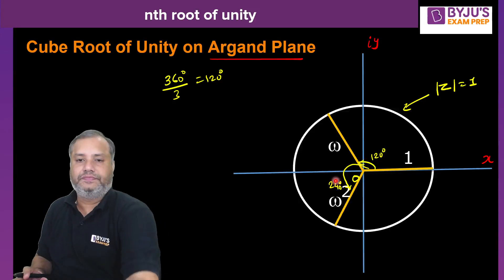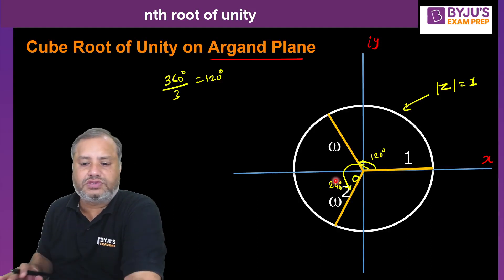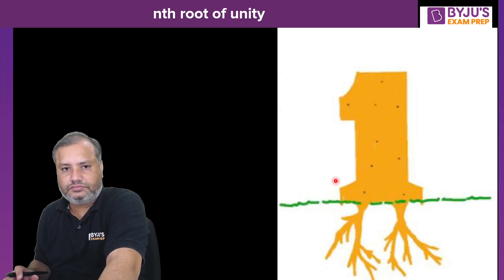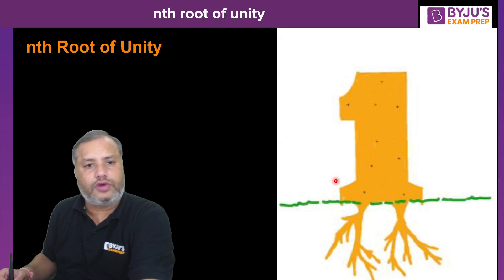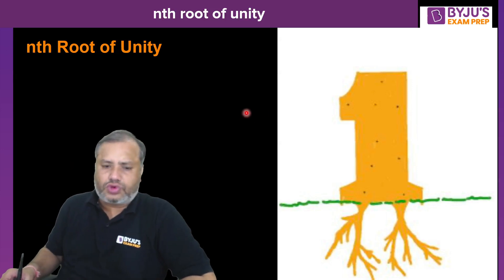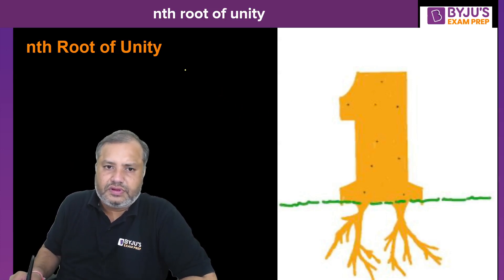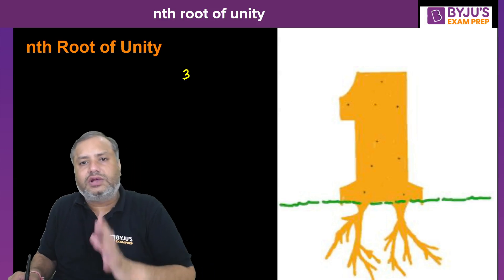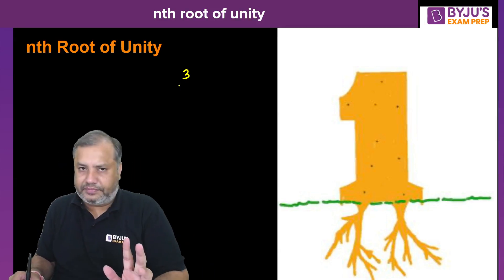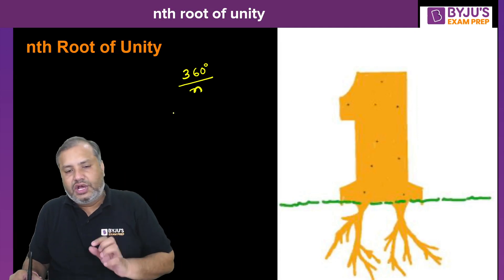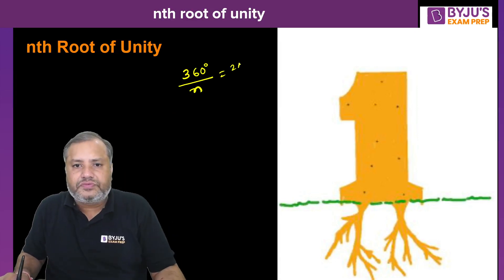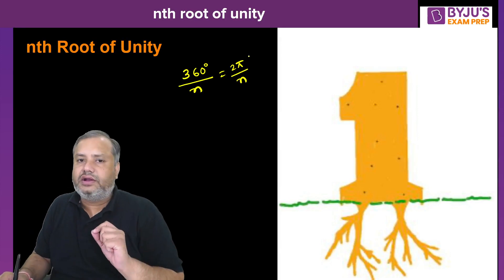Now generalizing to nth root of unity: all roots will have magnitude one, and the entire rotation of 360° is divided into n equal parts. Each part will have an angular shift of 2π/n radians.